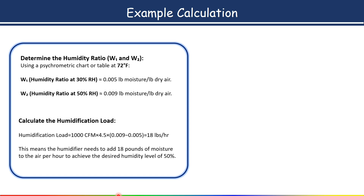The humidifier must add 18 pounds of moisture per hour to achieve the desired humidity level of 50 percent. In this way we select the humidifier. I hope all of you enjoyed the session. See you in the next one, and do not forget to subscribe and like if you are getting knowledge from this.